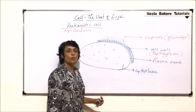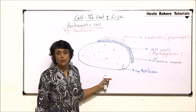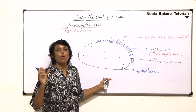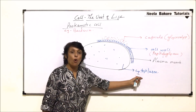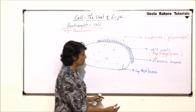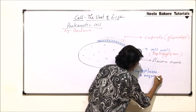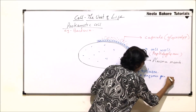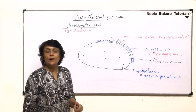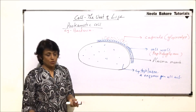Inside the cell is present the cytoplasm. In the case of prokaryotes, as we have said, there is no membrane-bound structure. So all the enzymes which are present in individual organelles of eukaryotic cells — all those enzymes, all those substances — are present in the cytoplasm. So cytoplasm has enzymes for all activities which are required for a cell's functioning.